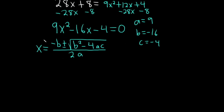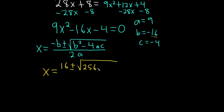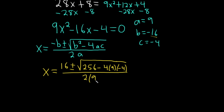Let's plug everything in. x equals — b is negative 16, but it's already negative here so it becomes positive 16 — plus or minus the square root of b squared: negative 16 squared is positive 256, minus 4 times a (which is 9) times c (which is negative 4). Always be careful here because if c is negative, the two negatives make it positive inside. And then 2a is 2 times 9, which is 18.